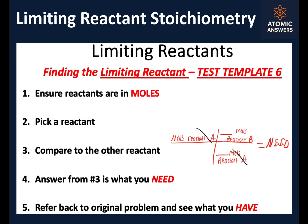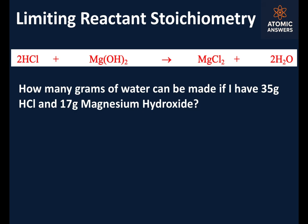Step one: ensure both reactants are in moles — and they're not, they're in grams. So we need to take the 35 grams of hydrochloric acid and convert that to moles. By definition, one mole of hydrochloric acid is equal to what it weighs in grams on the periodic table — I'm going to round a little bit — that's about 36 grams of HCl. Grams of HCl cancel, now we're in moles: 35 divided by 36 gives us 0.972 moles of HCl.